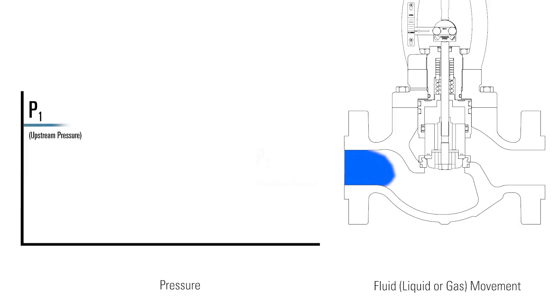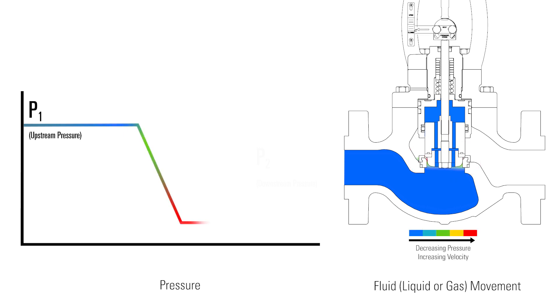Fluid enters a valve at its upstream pressure, shown here as P1. As it continues through the valve and encounters the trim, the fluid reaches its greatest restriction. Immediately after this point, the fluid drops to its lowest pressure inside the valve, also referred to as the vena contracta.